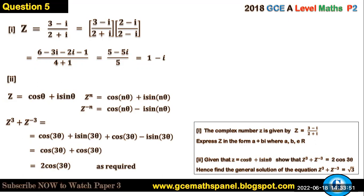Hence find the general solution of the equation z³ + z⁻³ = √3. Whenever they use the word hence, it means you must use your answer or solution in the previous question to continue solving. You are not allowed to use another method. However, if they say hence or otherwise, it means you are free to continue or you may use another method.